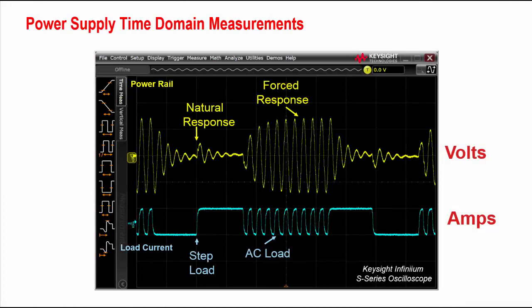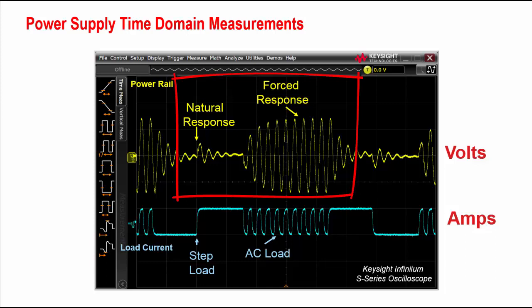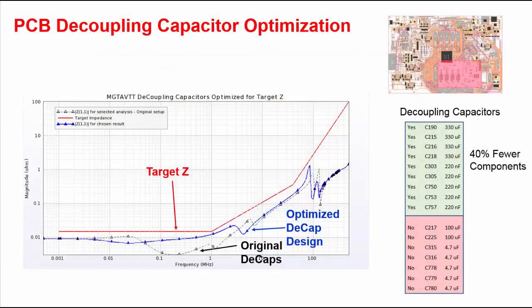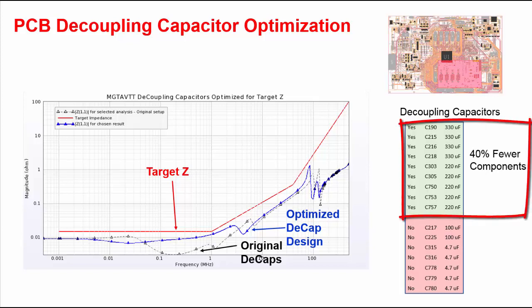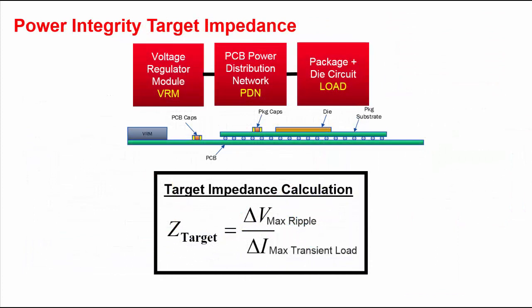Decoupling capacitors are used to keep the power rail transient voltages within allowable limits. Improper decoupling capacitor selection can result in ringing with two potential responses. The AC forced response is larger than the natural step response by a factor of the resonant Q. Maintaining a flat impedance with the minimum number of capacitors is a fundamental goal. The target impedance is determined by the allowed voltage transient and the expected transient load current.